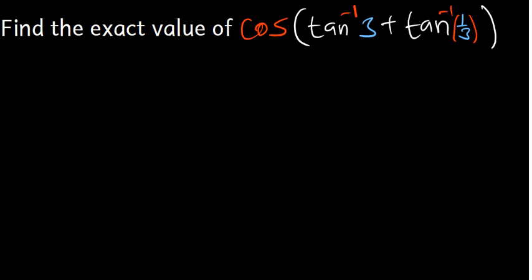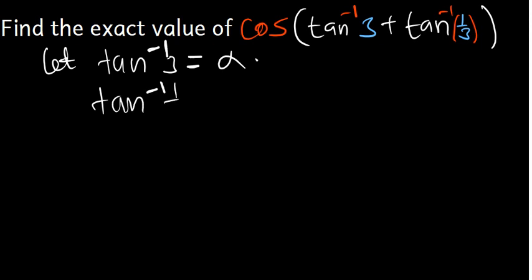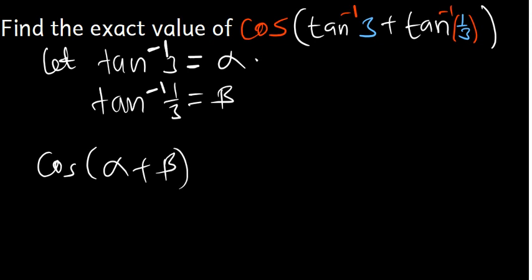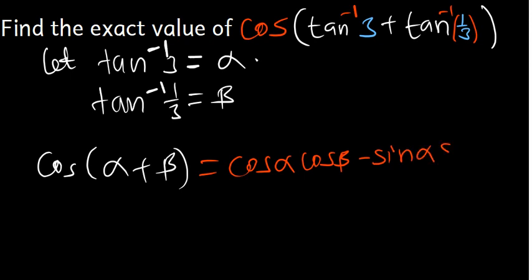We treat this as a compound angle identity. Let tan⁻¹3 = α and tan⁻¹(1/3) = β. We can then replace tan⁻¹3 with α and tan⁻¹(1/3) with β, giving us cos(α + β), which is the cosine addition identity.